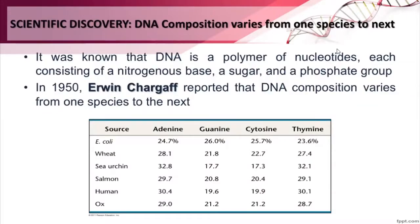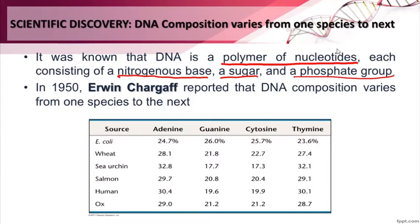Several experiments after Hershey and Chase characterized and identified the composition of DNA. It was discovered that DNA is a polymer of nucleotides, each consisting of a nitrogenous base, a sugar, and a phosphate group. However, even after DNA's composition was characterized, it still wasn't clear how DNA encodes genetic information. Additional research by many scientists led to the discovery of the DNA structure, clarifying how DNA can encode large amounts of information. One of those scientists is Erwin Chargaff.